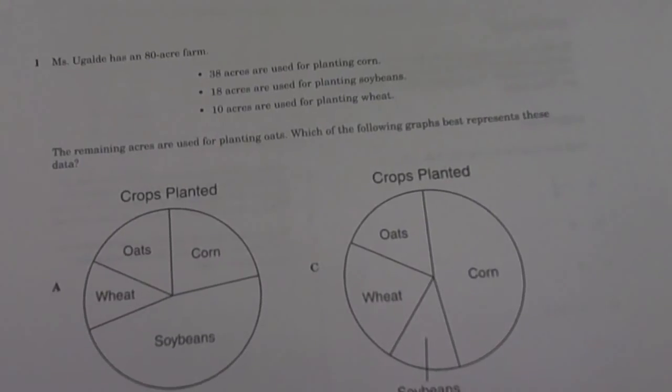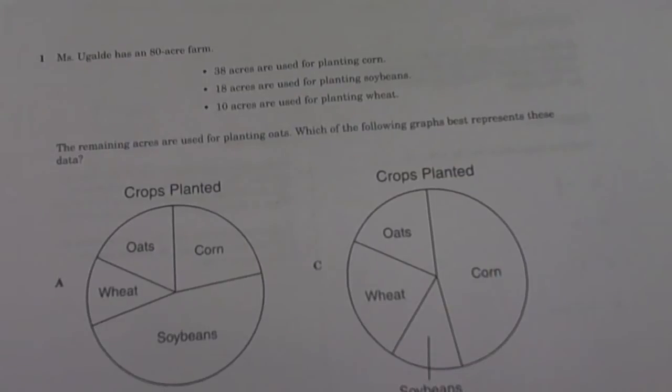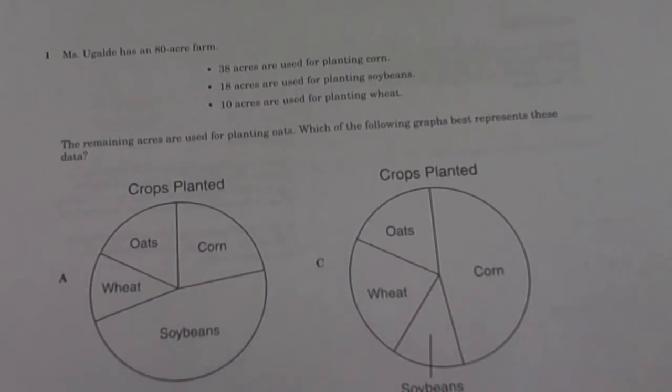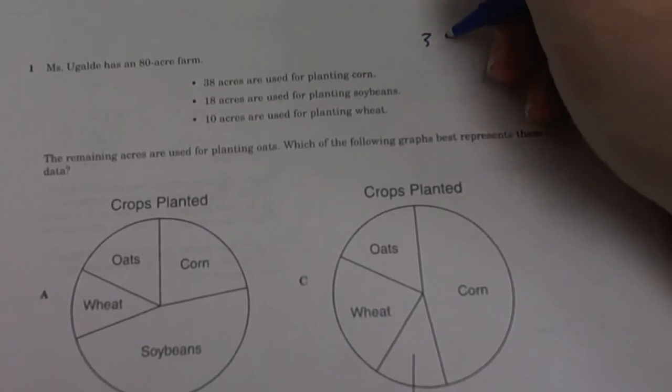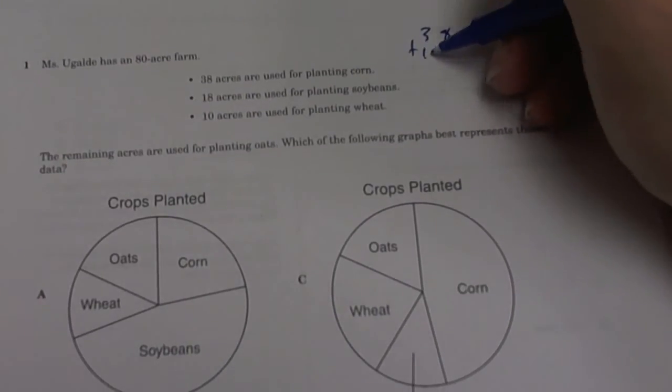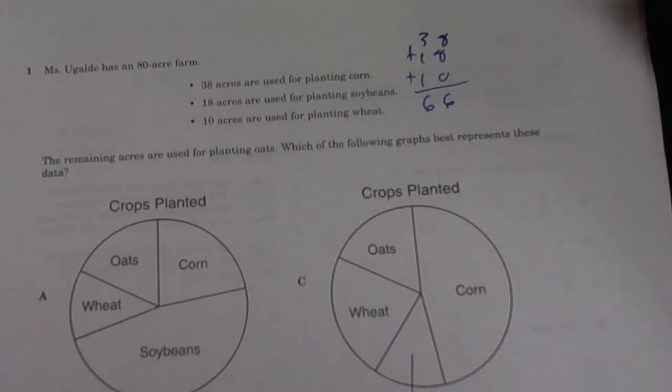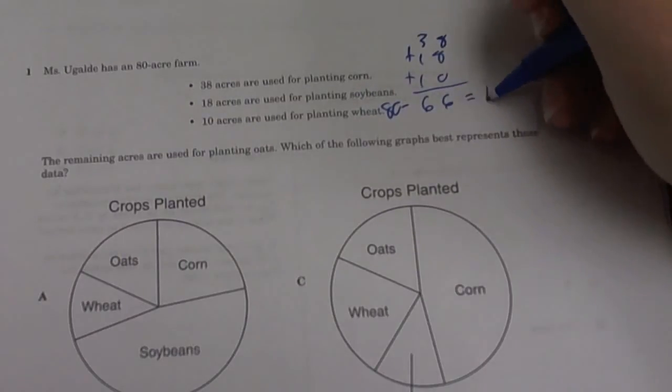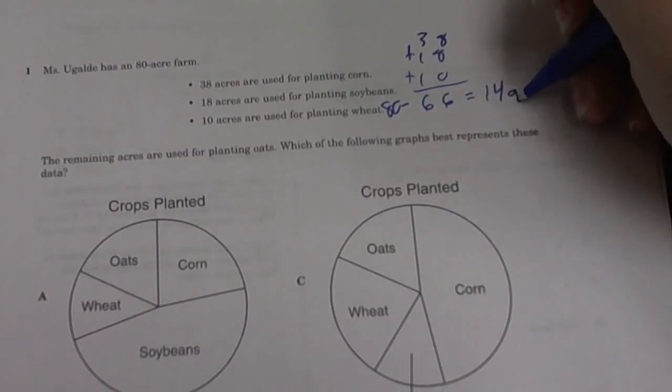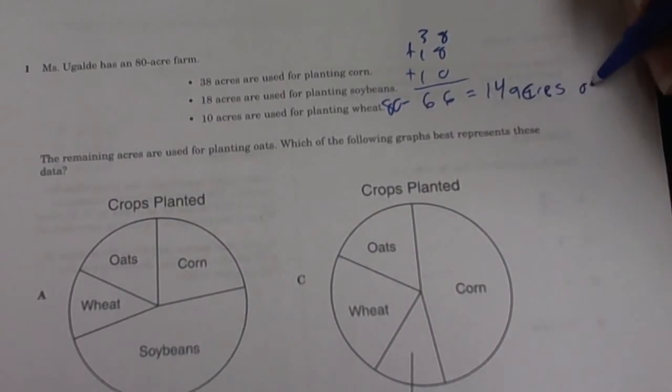30 acres are used for corn, 18 for soybeans, and 10 for wheat. The remaining are used for planting oats. So first of all, I've got to find how many oats we're going to be planting. You have to add up 38 plus the 18 plus the 10 gives you 66. So 80 minus 66 gives us 14. So it would be 14 acres of oats.